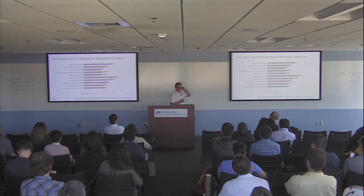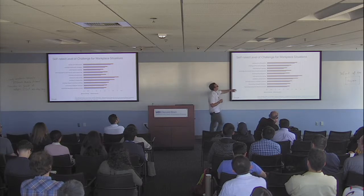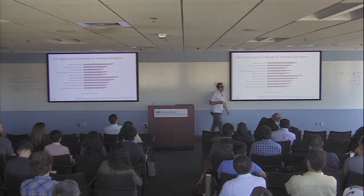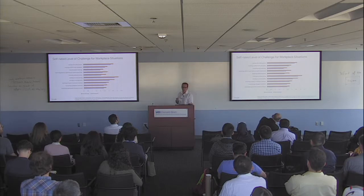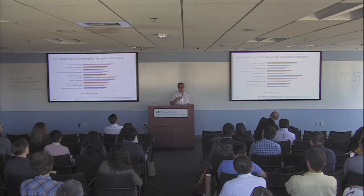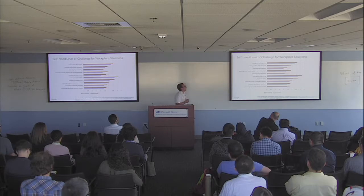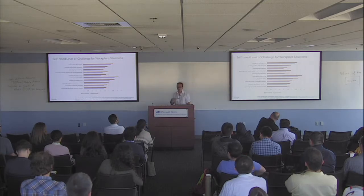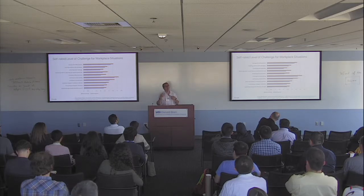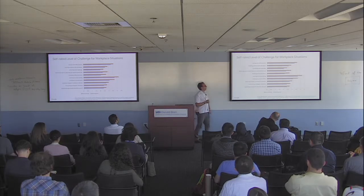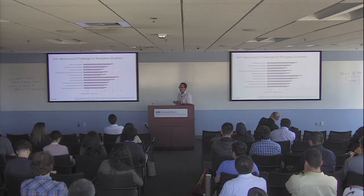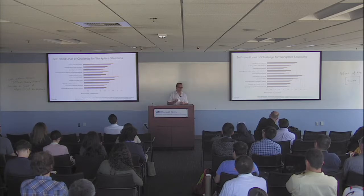Dealing with changes to routines, interpreting colleagues' emotions, and expressing appropriate emotions at work were also more challenging for neurodiverse engineers. This suggests the trend at Google and many companies of putting engineers in shared noisy offices may disproportionately affect neurodiverse engineers. One solution Microsoft implemented is offering quiet rooms where anyone — neurodiverse or neurotypical — can decompress. It's important to note there were several other challenges showing no significant difference between the groups.